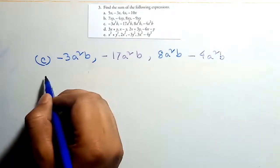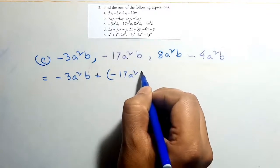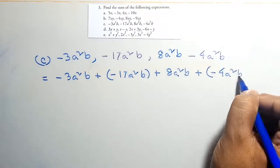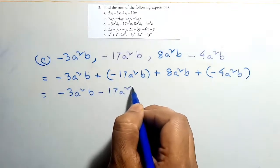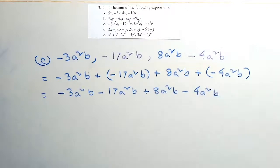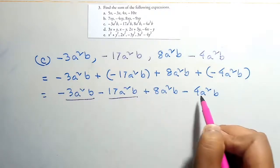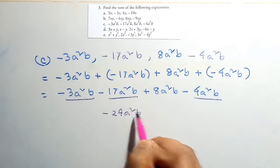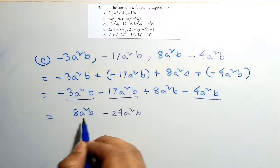According to equation C: minus 3a²b plus minus 17a²b plus 8a²b plus minus 4a²b. Negative terms: minus 3a²b minus 17a²b minus 4a²b equals minus 24a²b. The only positive value is 8a²b. So 8a²b minus 24a²b gives minus 16a²b... wait, subtracting gives minus 6a²b.